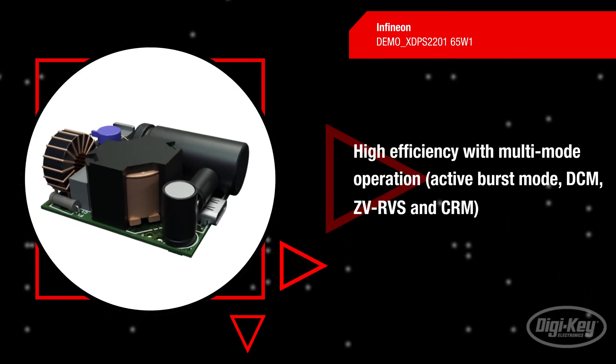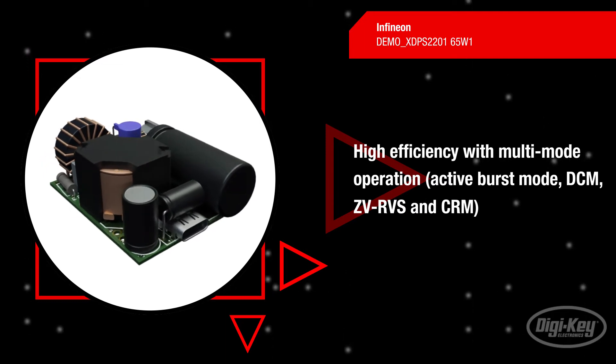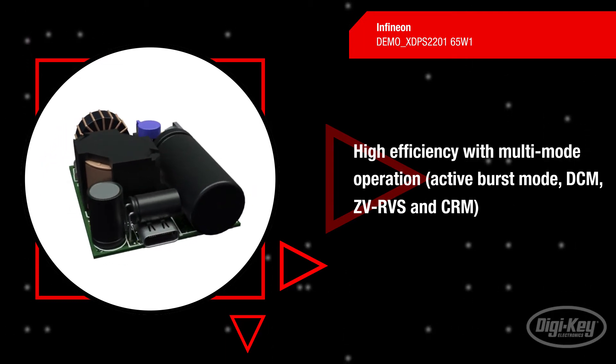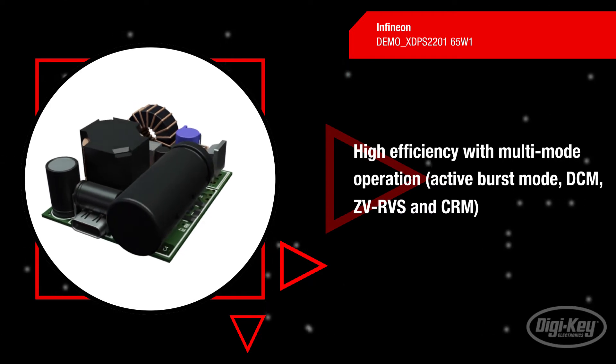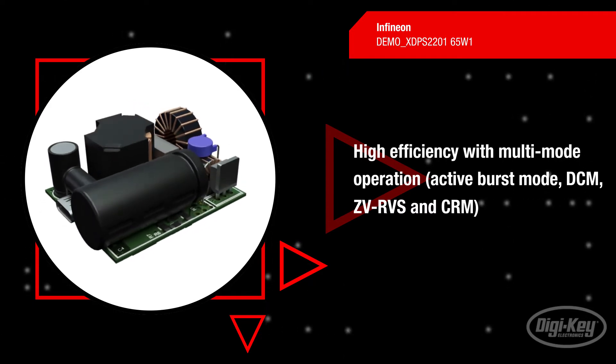Zero voltage switching on the primary side and zero current switching on the secondary side are achieved through the means of regulating both positive and negative magnetizing current to increase efficiency.